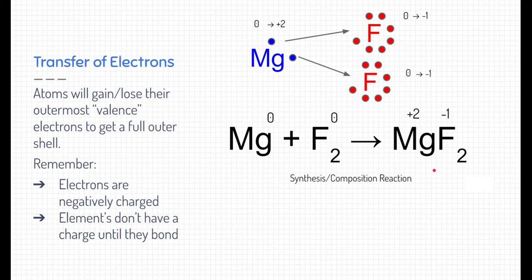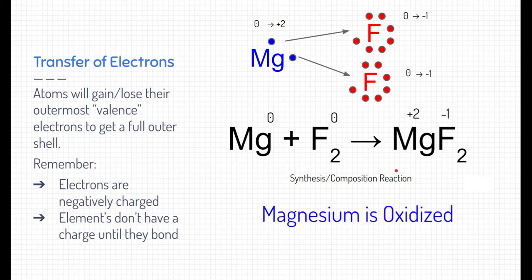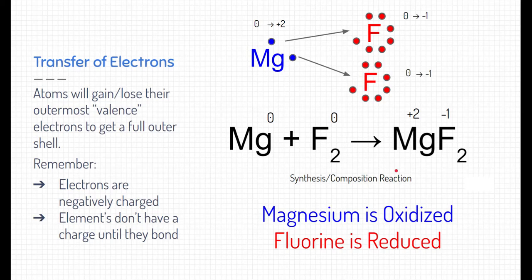This is oxidation-reduction, and it is also a synthesis or composition reaction — that's the main type of reaction. But it is redox because magnesium is being oxidized. Remember Leo — it's losing electrons. Fluorine, on the other hand, is being reduced. Gaining electrons is reduction, which is what fluorine is doing.